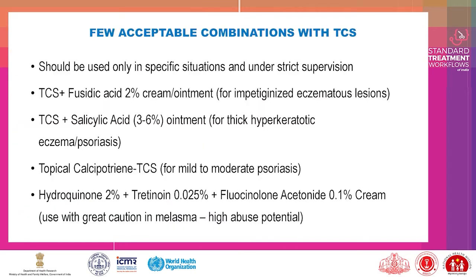Few acceptable combinations with topical corticosteroids should be used only in specific situations and under strict supervision. Topical corticosteroids with fusidic acid 2% cream or ointment can be used for impetiginized eczematous lesions. Topical corticosteroids with salicylic acid 3 to 6% can be used as an ointment for thick hyperkeratotic eczema or psoriasis. Topical calcipotriol with TCS can be used for mild or moderate psoriasis. Hydroquinone 2%, tretinoin 0.025%, and fluocinolone acetonide 0.1% cream can be used with great caution in melasma, given its high abuse potential.